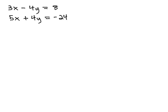We have 3x minus 4y equals 8, and 5x plus 4y equals negative 24. With no lone variable, we need a third method.